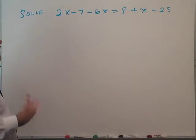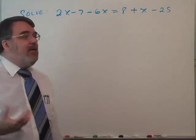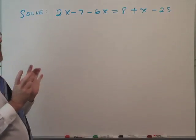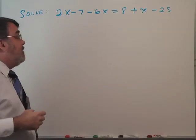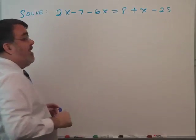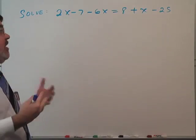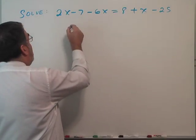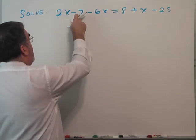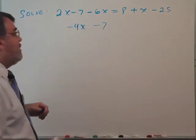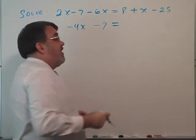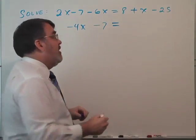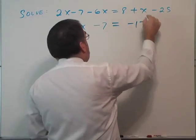Okay, now our first step, probably one of the best steps we can take here, is to shrink down both sides. So I'm going to combine terms on each side separately. And here you see that we have 2x and minus 6x, they're like terms. We can combine those. So 2x minus 6x is negative 4x and then the minus 7 stays where it's at. On the right side I can combine the numbers 8 minus 25 is negative 17 and then plus x.